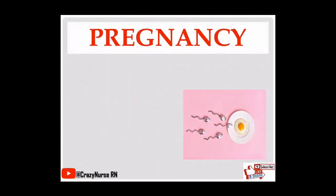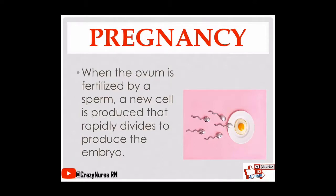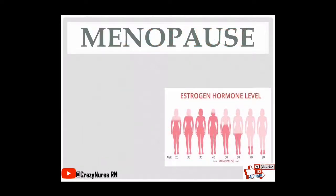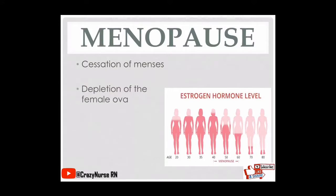Pregnancy is when the ovum is fertilized by a sperm and a new cell is produced that rapidly divides to produce the embryo. We also have menopause, which simply means the cessation of menses. It happens when there is a depletion of the female ova, resulting in lack of estrogen and progesterone. This usually happens in older women.